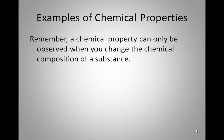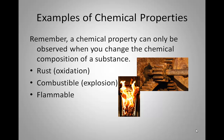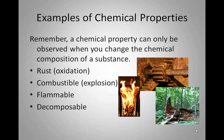Some examples of chemical properties. Remember, chemical properties can only be observed when you change the chemical composition of a substance. Like when our iron nails turned to rust — we actually changed the chemical composition from iron to iron oxide. So rust, also called oxidation, is one example. Whether or not something is combustible (if it can explode), if it's flammable (if it can burn), if it's decomposable like a tree or a body, and radioactive decay — when an element actually changes into another element — are all chemical properties.